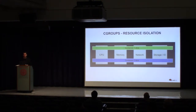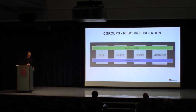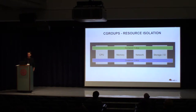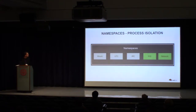First off, Cgroups — this provides resource isolation. How do you provide quality of service in a multi-tenant environment? Cgroups ensures that your CPU, memory, network, and storage are guaranteed levels to each process or container running on a host system, so you don't have the issue of one process consuming everything and not leaving enough for other processes or containers on that system.